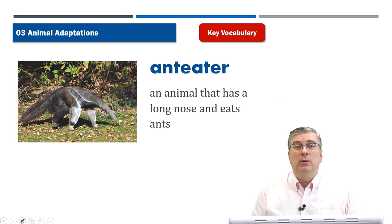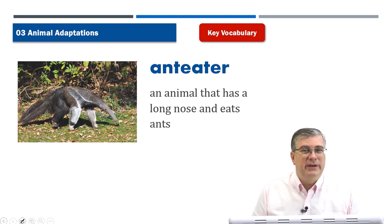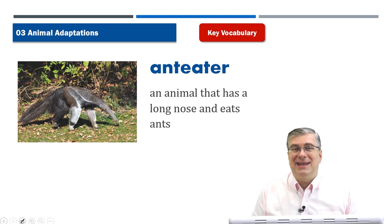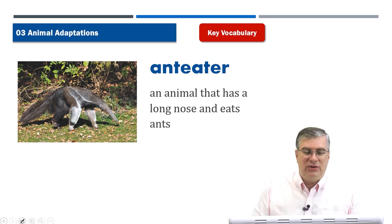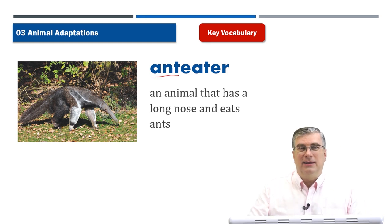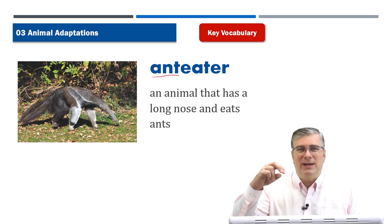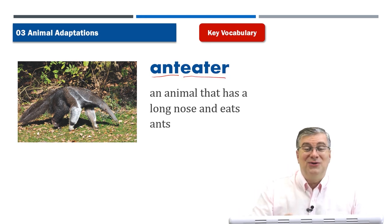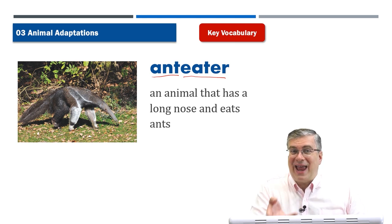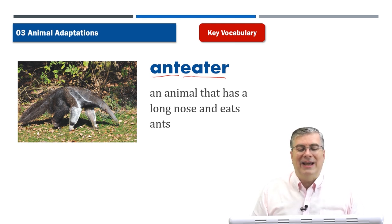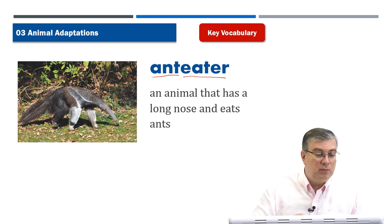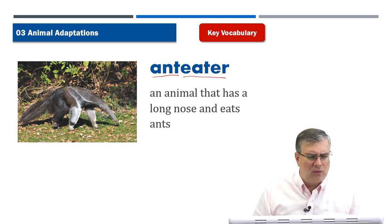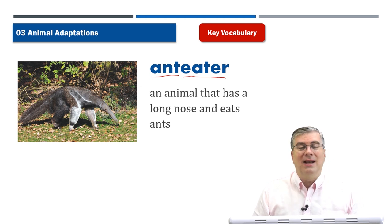Our first word for this lesson is 'anteater' — actually two words: ant and eater. An anteater is an animal that has a long nose and eats ants. It's a really strange-looking but unique and amazing animal. Next, 'tongue.' The tongue is the soft movable part in your mouth. A frog has a very famous and interesting tongue — look at how long it is. The frog can flick its tongue out at an insect far away and catch it because the tongue is sticky. The frog uses its tongue to catch insects.